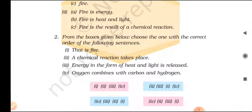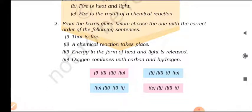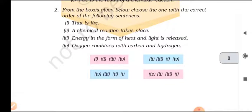Number two: From the boxes given below, choose the one with the correct order of the following sentences. The sentences are: one — fire; two — a chemical reaction takes place; three — energy in the form of heat and light is released; four — oxygen combines with carbon and hydrogen. The correct arrangement is: four, two, three, and one.